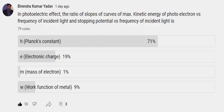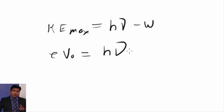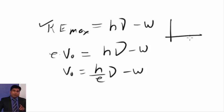So let me write both the equations. I can write kinetic energy max is equal to h nu minus w, that is work function, and I can also write e V0. V0 is what? Stopping potential is equal to h nu minus w. So we can write V0 is equal to h upon e nu minus w. Now if I draw a graph for this, y axis is kinetic energy max, x axis nu, what will be the graph? This.